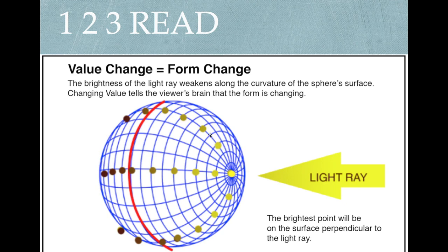Now, as that form curves away, the bounce of that ray is going to be weaker and weaker and weaker until it's passing by it without directly touching it. That's about this point right here. This is called the terminator. That's where the form turns under and away, and that's where you generally put shadow on a form.